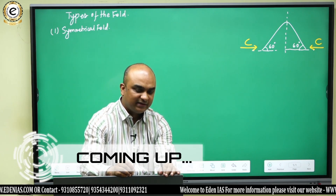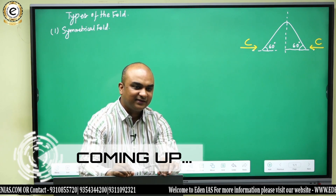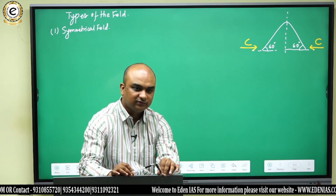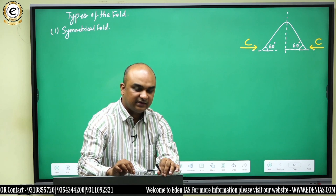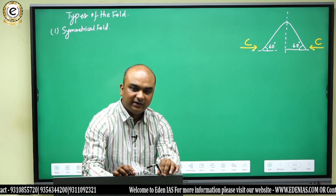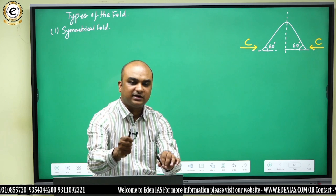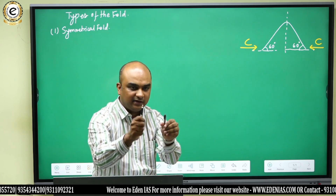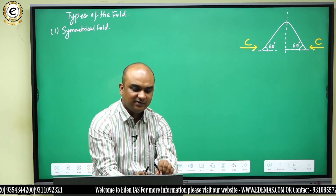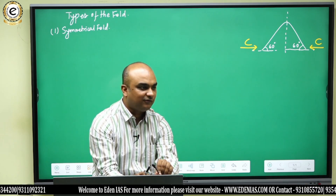Now if I have to convert them into a fold, I have to join them like this. Now can you see this angle is more acute, whereas this is still a greater angle. So when both the limbs are of the same size — if I join them at the same height, what will happen? A symmetrical fold.